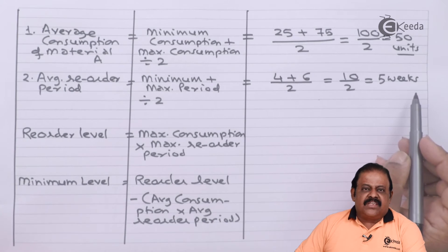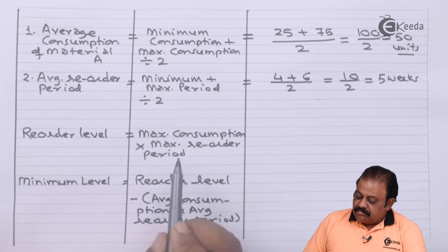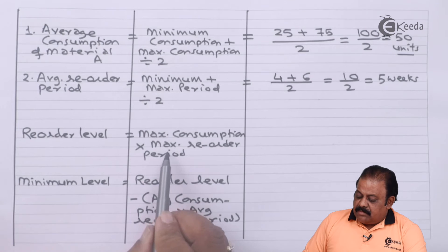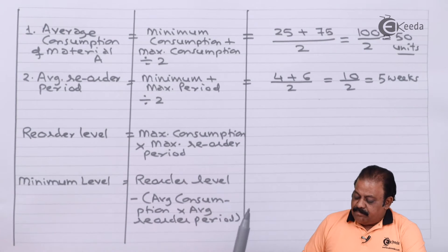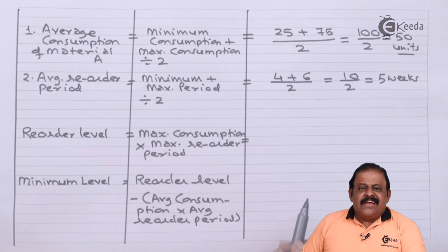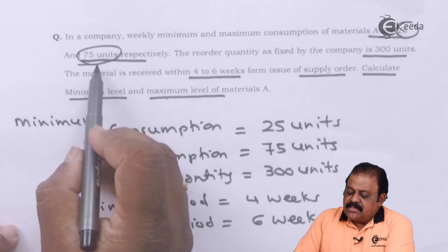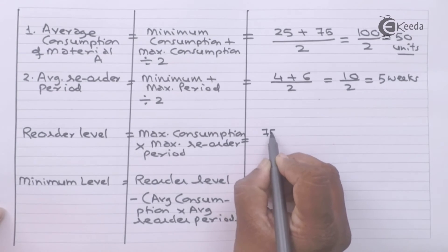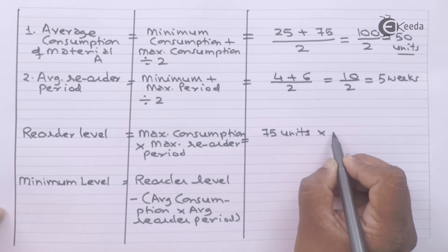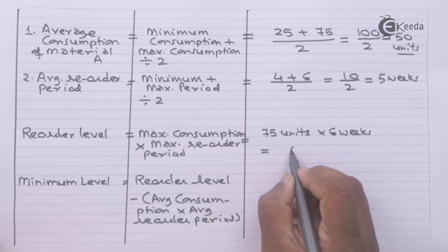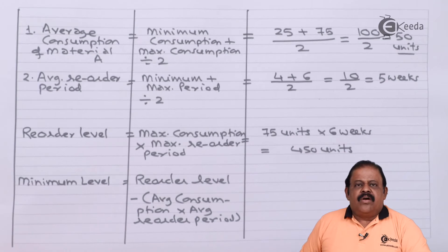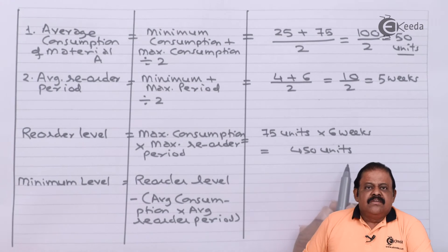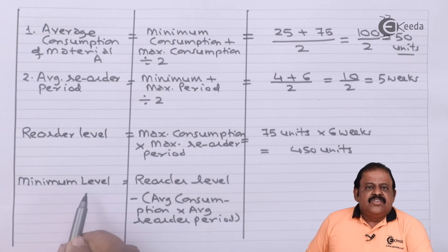Now we calculate the reorder level using the formula: maximum consumption multiplied by maximum reorder period. Maximum consumption is 75 units and maximum period is six weeks, so reorder level is 75 × 6 = 450 units.